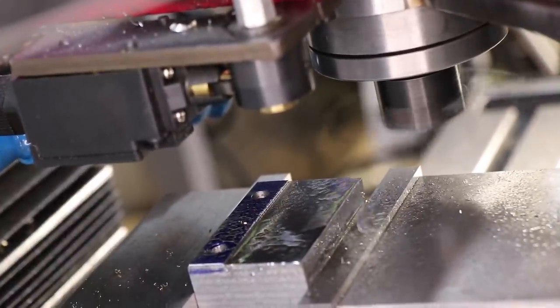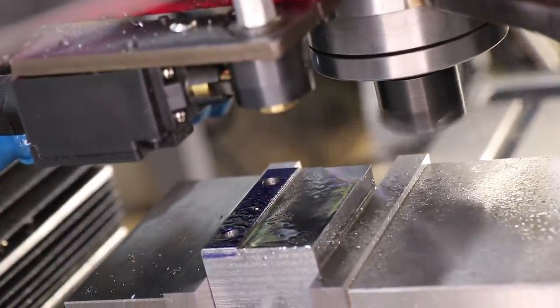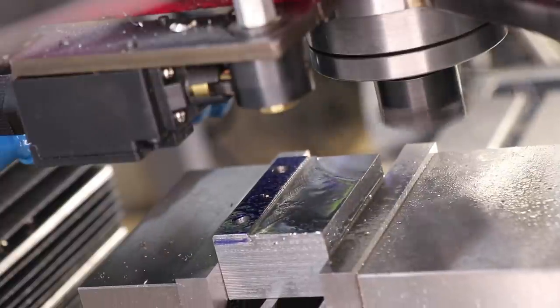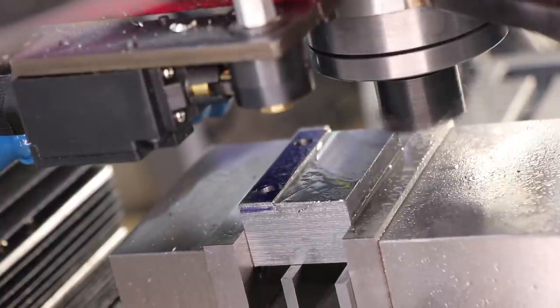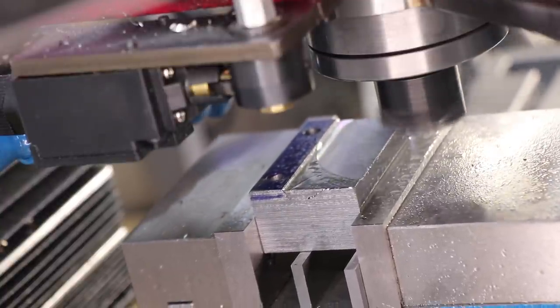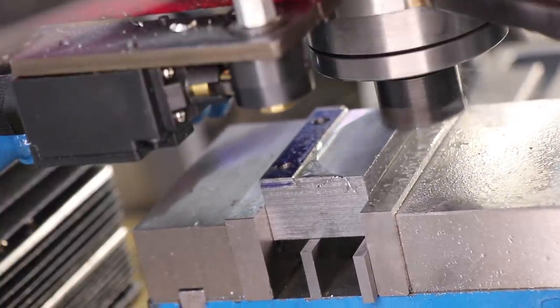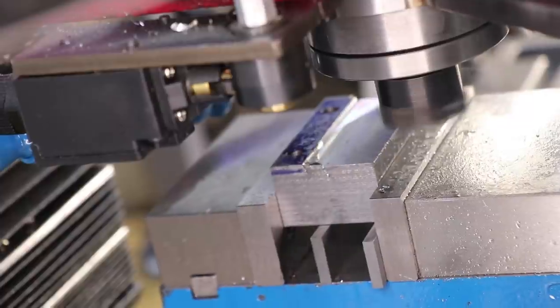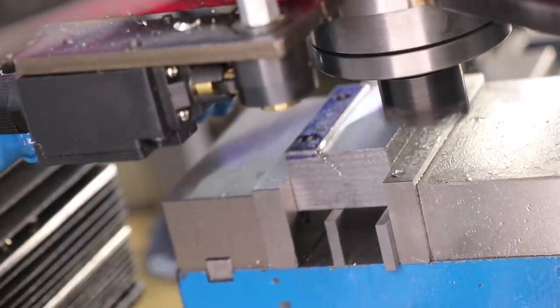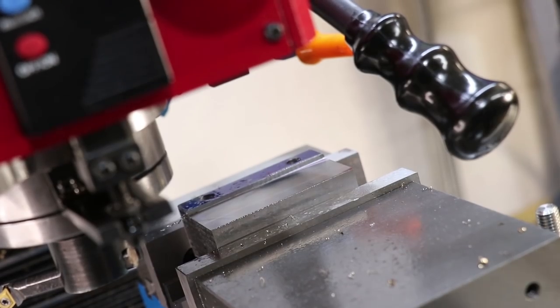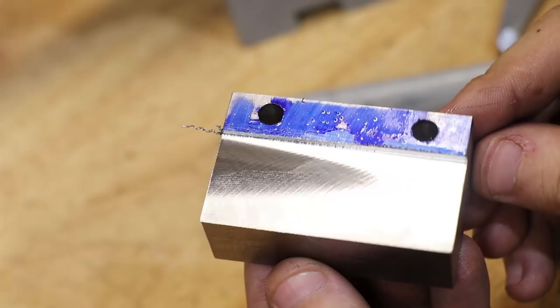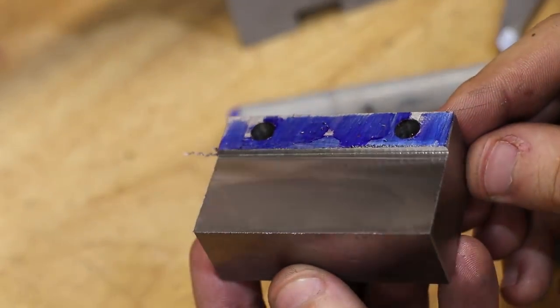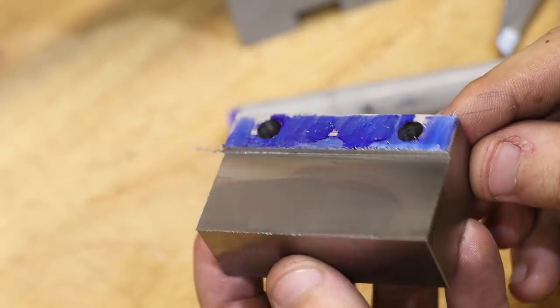I've swapped out my regular insert that I use for fly cutting for a DCMT boring bar. I've done this just so I can get a bit more of a crisp corner that I couldn't achieve with that round insert. And you know what, I wasn't expecting all that much for the fly cutter, but that is a really nice finish.